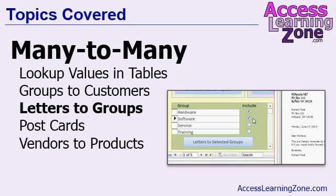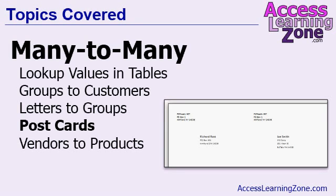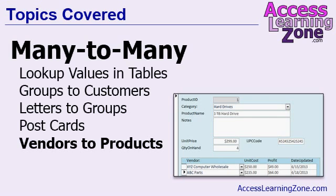We'll also learn how to manage duplicate values. By popular request, we'll see how to format a report to print postcards. We'll learn some new manual report formatting techniques. And finally, we'll go through a second example of a many-to-many relationship relating vendors to products, where each vendor can provide multiple products, and each product can be purchased from multiple vendors. We'll set up a unit cost for each vendor for each product, so you can compare prices and purchase from the cheapest vendor.